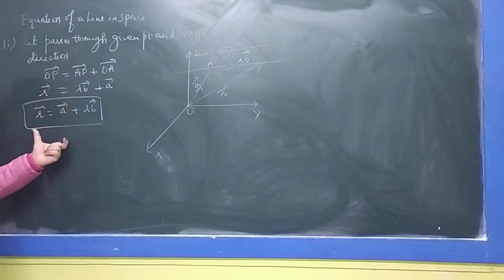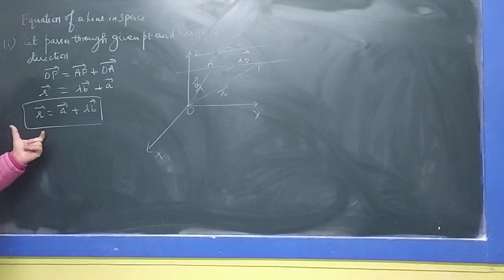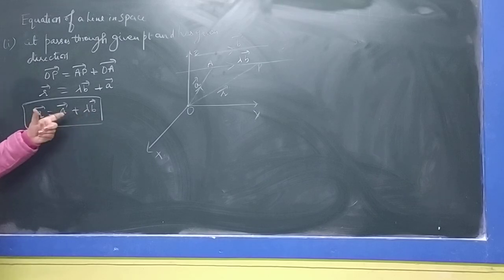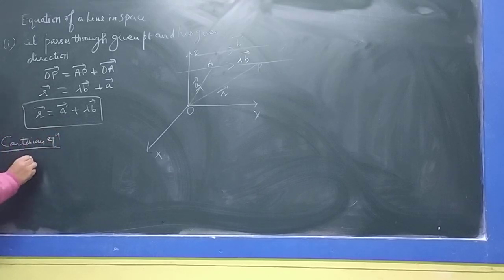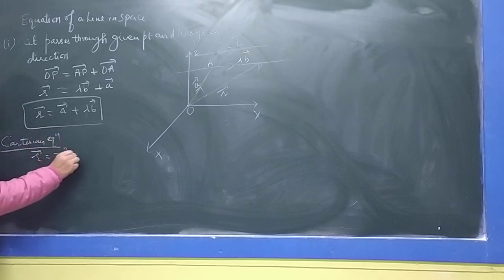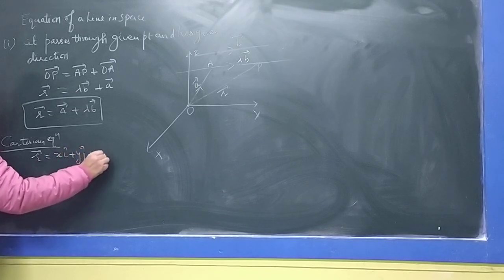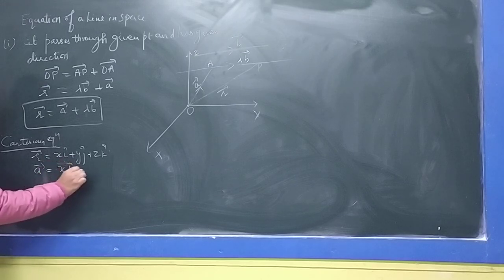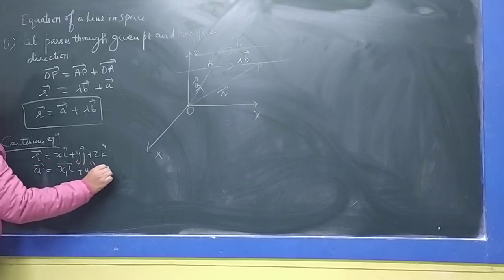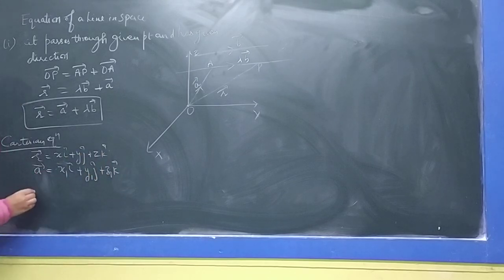Direction is given, point is given. Now if you want to convert the vector equation into Cartesian form: R equals X i-cap plus Y j-cap plus Z k-cap, and A vector equals X1 i-cap plus Y1 j-cap plus Z1 k-cap.